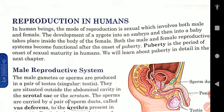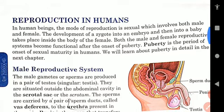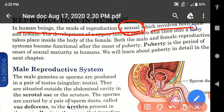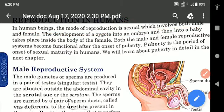So in the first paragraph — that is on human reproductive system or reproduction in human beings — in human beings the mode of reproduction is sexual. So what kind of reproduction do we have? We have the sexual mode of reproduction which involves both the male and female sex. Both the male and female individual are required for sexual reproduction.